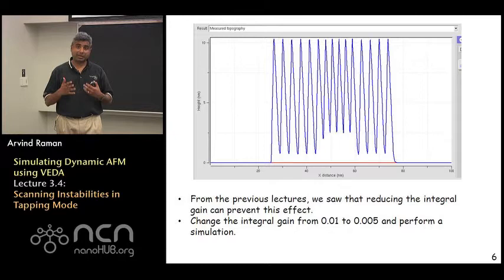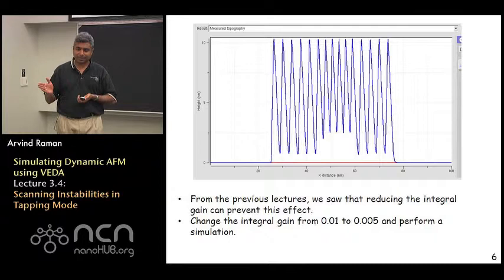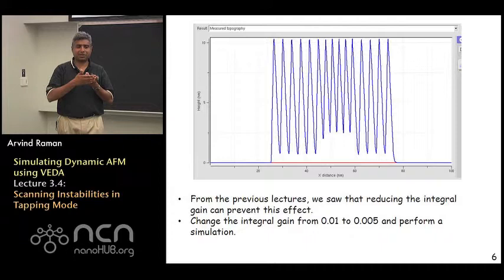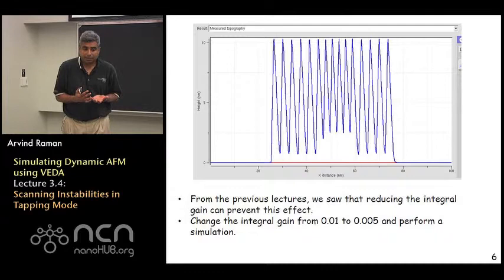However, as soon as we hit the feature, something pretty dramatic seems to happen here. We find the z controller is moving up and down by a very large amount, several nanometers, trying to keep the amplitude constant. And this very jagged profile would appear, you can imagine, if you were doing an image, it would appear as a sequence of ridges, a whole bunch of ridges as soon as you hit this sticky feature.